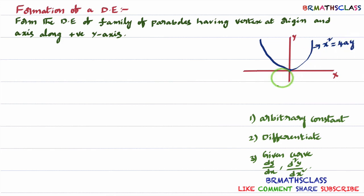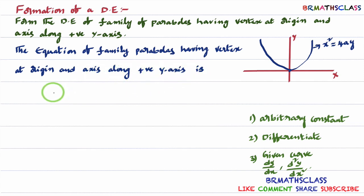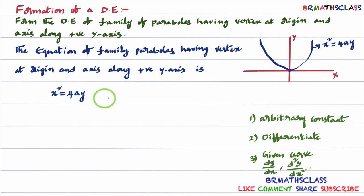If the parabola is in the downward direction, then x² = −4ay. The equation of family of parabolas having vertex at origin and axis along positive y-axis is x² = 4ay. So we have now got the equation of the family of parabolas.